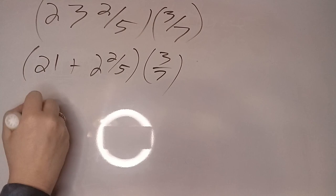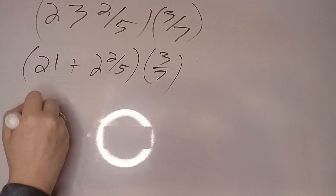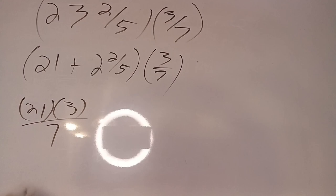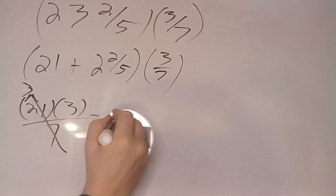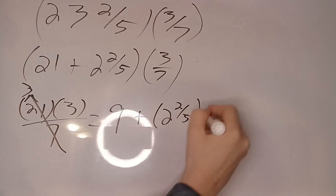So when we multiply this times this we get 21 times 3/7. All right, now 21 divided by 7 is 3. 3 times 3 is 9. So we have 9 plus 2 and 2/5 times 3/7.